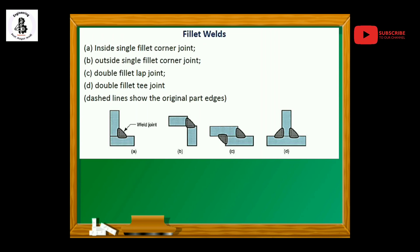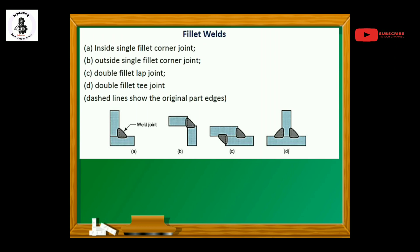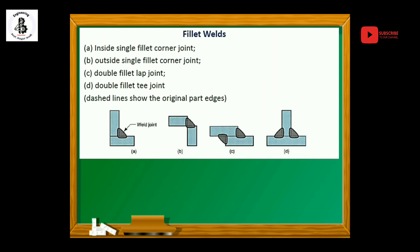Fillet welds have wide applications in industry. In figure A, it is indicated as an inside single fillet corner joint — if you want to make corner joints for two plates, using a single fillet weld from the inside. In the second figure, the outside single fillet corner joint is another category of corner joint where the single fillet welding is performed on the outside.